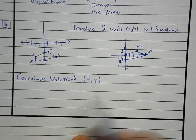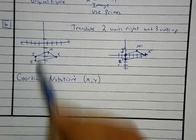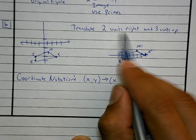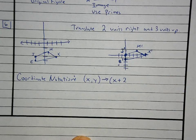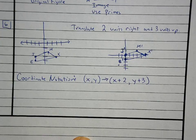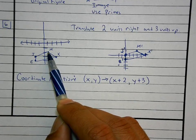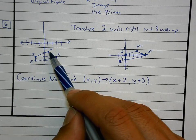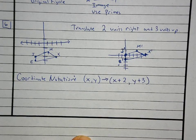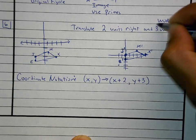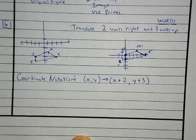The first thing we do for coordinate notation is write X, Y. Two units to the right means we write X plus two. Three units up means comma Y plus three. So the full notation is (X, Y) → (X + 2, Y + 3). This means: add two to the X coordinate and add three to the Y coordinate. This is the same thing as 'two units right and three units up' written in words — this is the mathematical coordinate notation version.